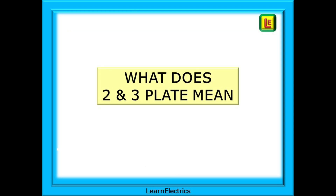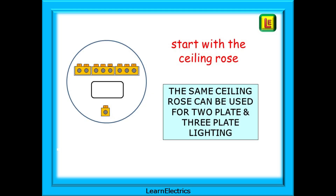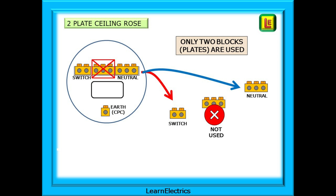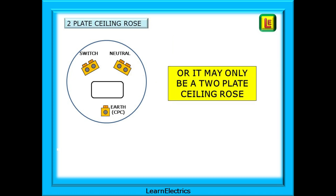What does two- and three-plate really mean? Let's start with the ceiling rose, because this is where we find a major difference. The same ceiling rose can be used for two-plate and three-plate lighting — it's just used differently. In a three-plate ceiling rose, there are three blocks or plates used for the wiring, and all three plates are used. Within a two-plate ceiling rose, only two of the blocks or plates are used; the centre block is not used. A two-plate ceiling rose might also be made with only two plates or blocks, plus earth of course.